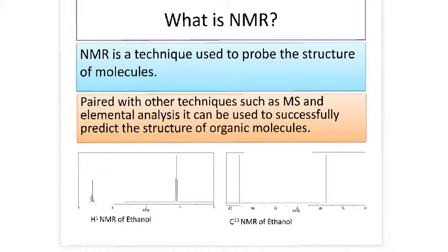There are two main sorts of NMR that we're going to talk about at A-level, which is proton and carbon. There are other elements that you can do NMR with, but we don't need to worry about that at A-level.